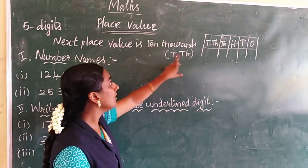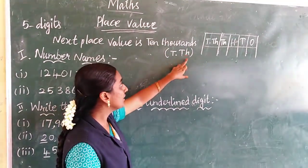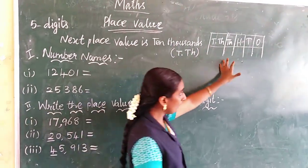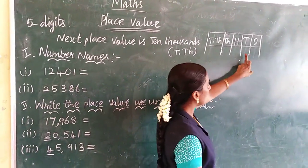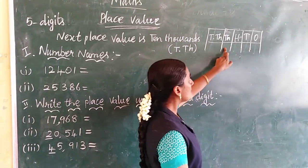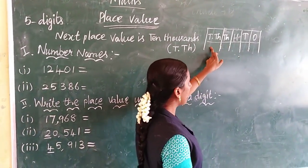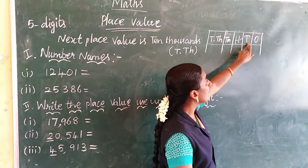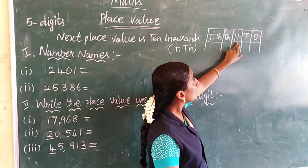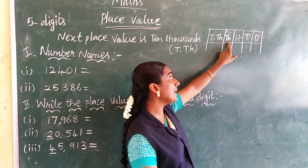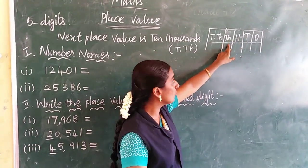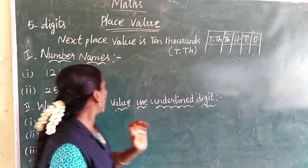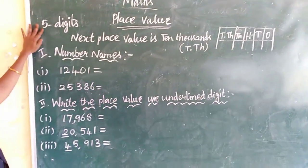T for 10. T-H means 1,000. Ok, look at the chart: 1s, 10s, 100, 1000, 10,000. O for 1s, T for 10s, T-H for 100, T-H for 1000, and T-T language for 10,000. Ok, now look at the final number.